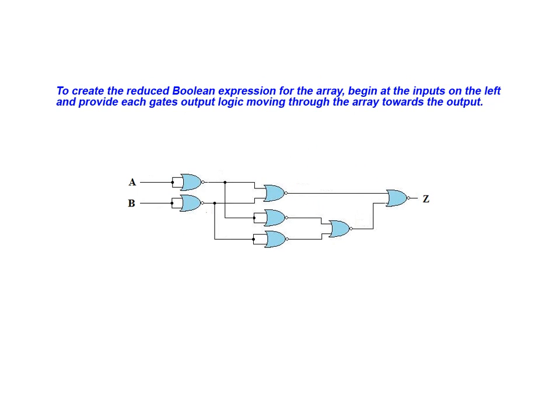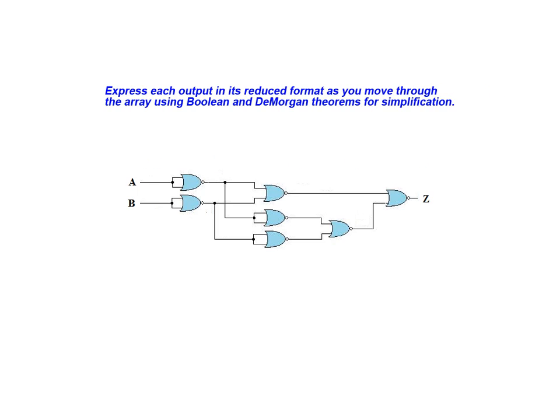To create the reduced Boolean expression for the array shown here we begin at the inputs located on the left hand side and provide the output logic for each gate as we move through the array towards the output. We will express each gate output in its reduced format as we move through the array using Boolean and DeMorgan theorems for simplification.